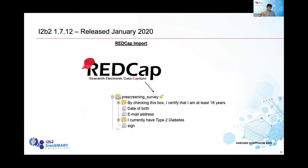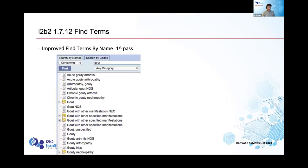Another major addition was REDCap import: you can now link i2b2 live to a REDCap project so that i2b2 automatically updates when a survey is submitted. i2b2 creates an ontology based on the REDCap survey form automatically, giving you a live stream of REDCap data flowing into i2b2. We also completely rewrote the Find Terms interface.